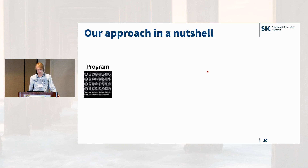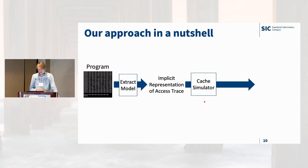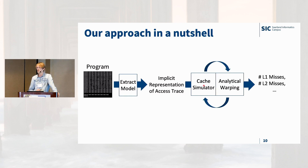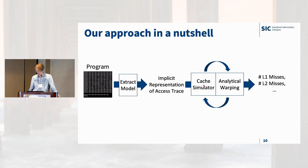Here's our approach in a nutshell. The front-end is similar to existing work: we derive a Presburger representation of the access trace. For the back-end, we combine two things: a standard cache simulator — you can plug in whatever policy you want — combined with a warping component. The warping component watches the simulator, and when it detects recurring patterns, it uses those patterns to warp over a sequence of accesses, applying polyhedral techniques and using knowledge of future memory accesses in an analytical fashion.